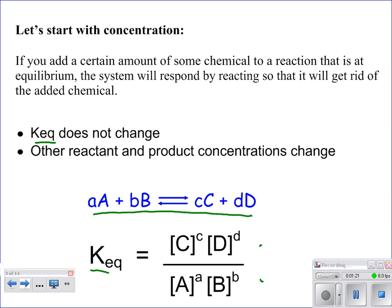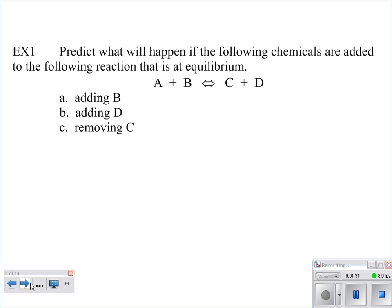K-eq, your equilibrium constant, does not change with changing concentration. So in our first example, if we have A plus B yields C plus D, and we assume it started at equilibrium then added some B — since you now have excess B, the system wants to get rid of it, so it's going to shift in the direction of the products to remove that chemical, creating more products.